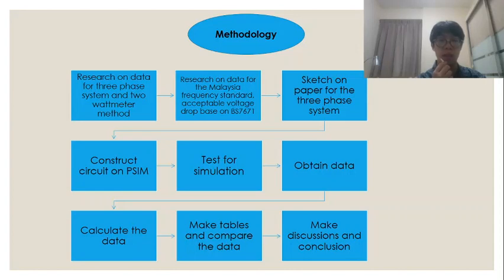Next, the data from the simulation was obtained and recorded, then the actual values were calculated based on the formulas and understanding of the circuit to obtain the calculated values for the parameters. A table was then constructed to compare the measured values from PSIM and the calculated values. Lastly, discussions and conclusions were made based on the data obtained and compared.